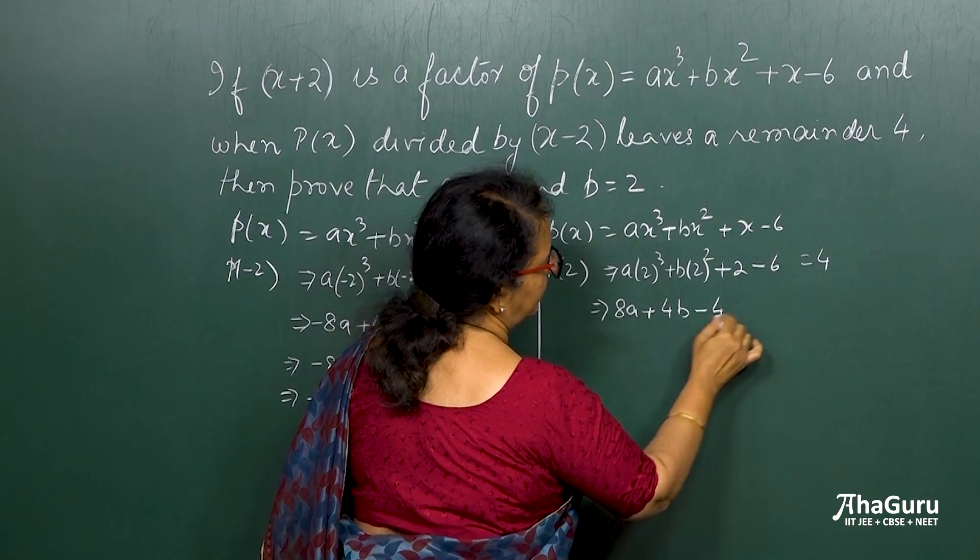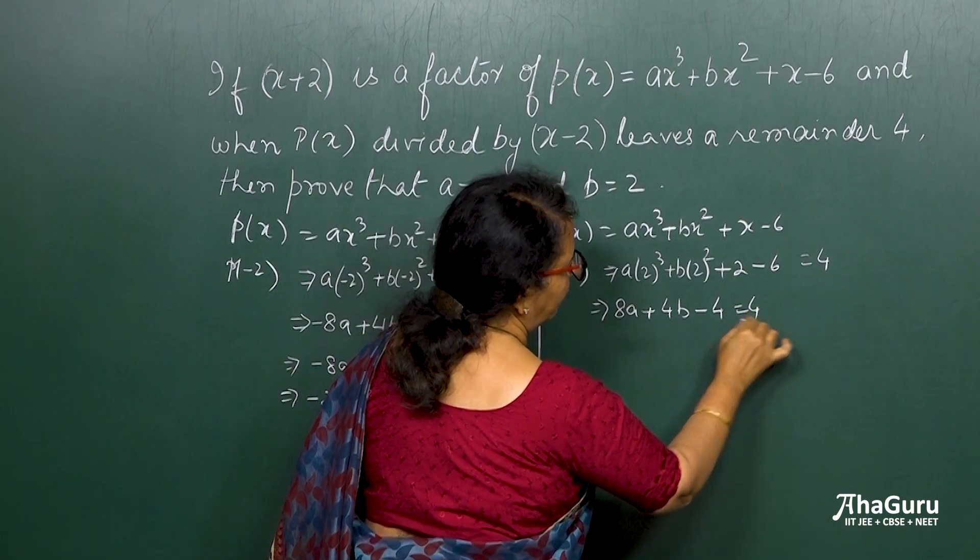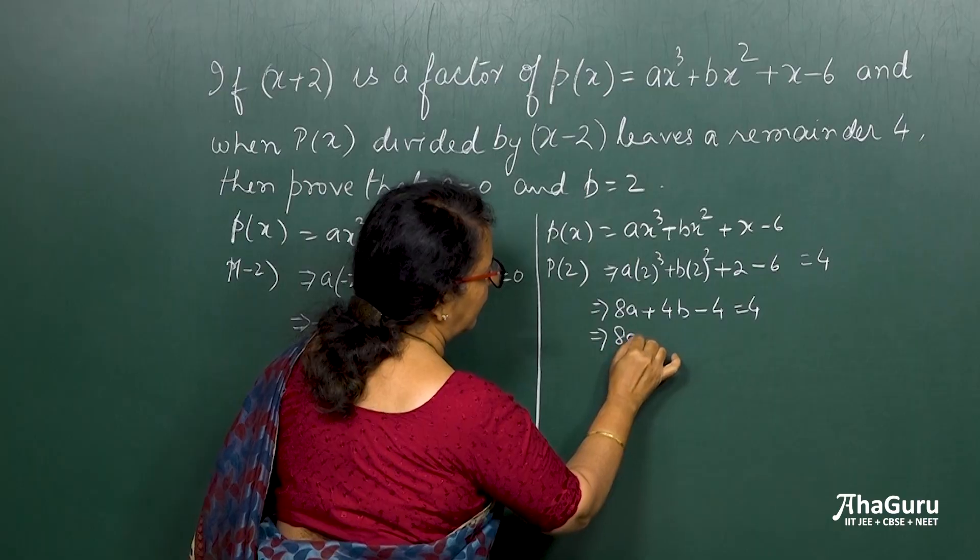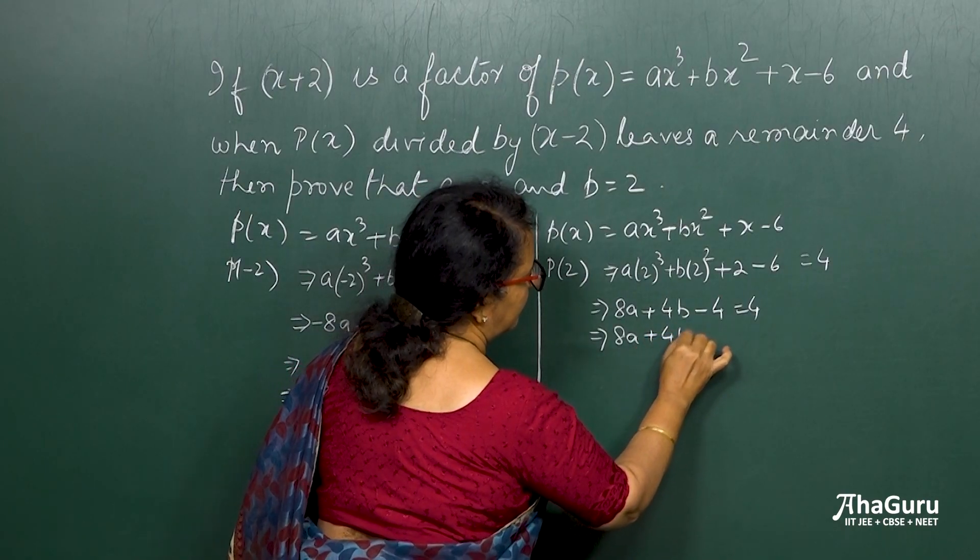So that gives me 2 cube is 8a plus 4b minus 4. This is plus 2 minus 6 is minus 4 is equal to 4. If I take it to the other side, it gives me 8a plus 4b is equal to 8.